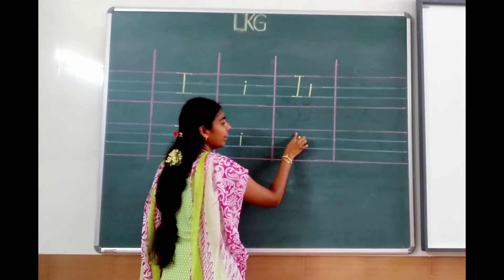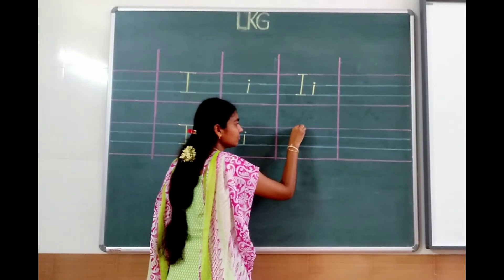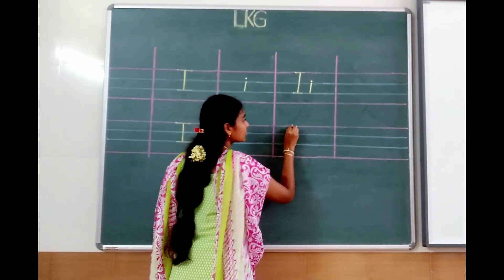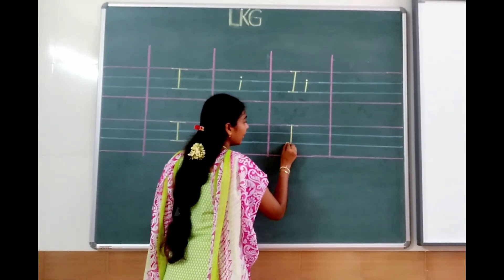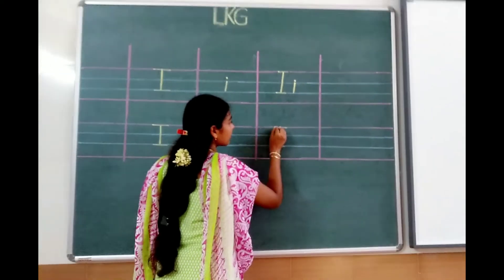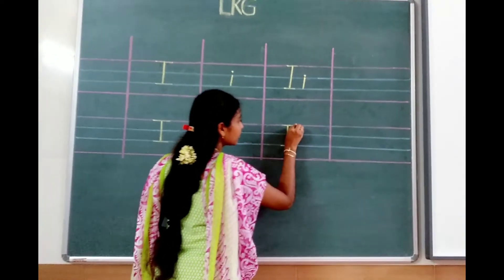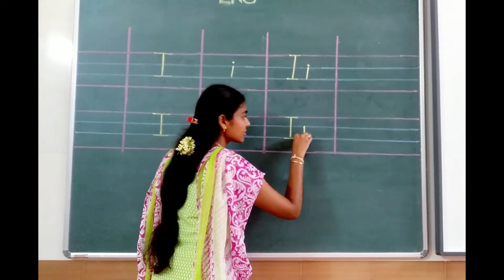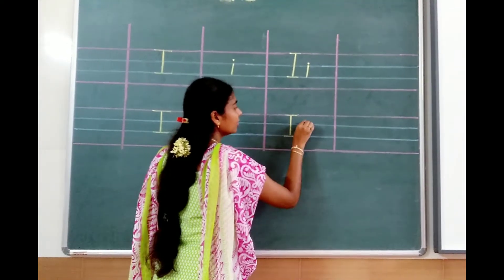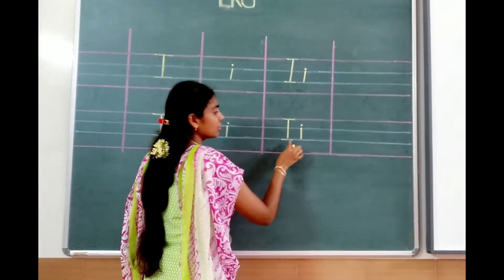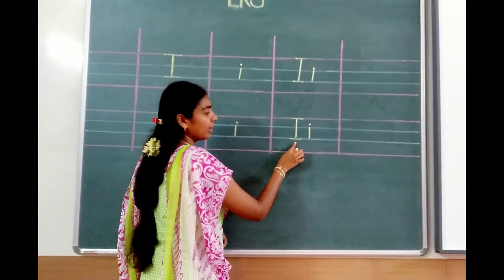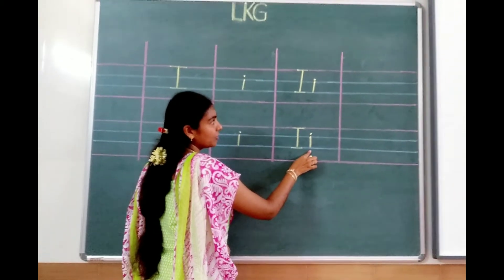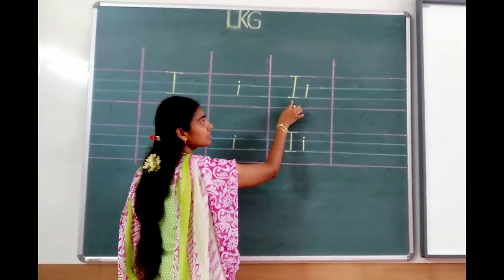Shall we try? Standing line, sleeping line, standing line, sleeping line, small line, standing line. This is capital I. Small I — shall we say the words?